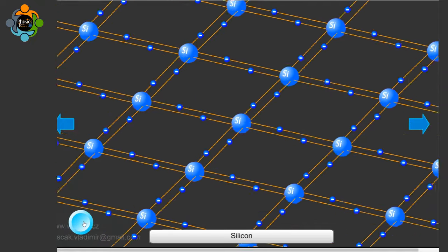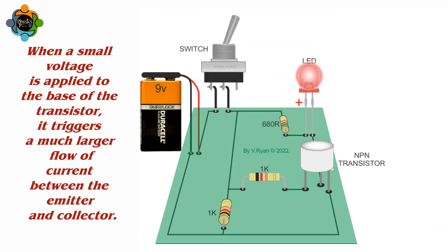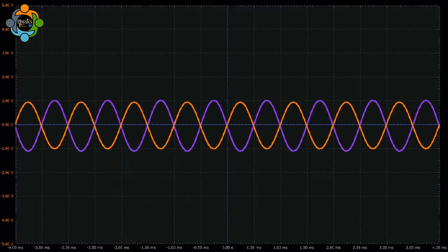When a small voltage is applied to the base of the transistor, it triggers a much larger flow of current between the emitter and collector. This amplification process forms the basis of many electronic devices, from radios to smartphones.